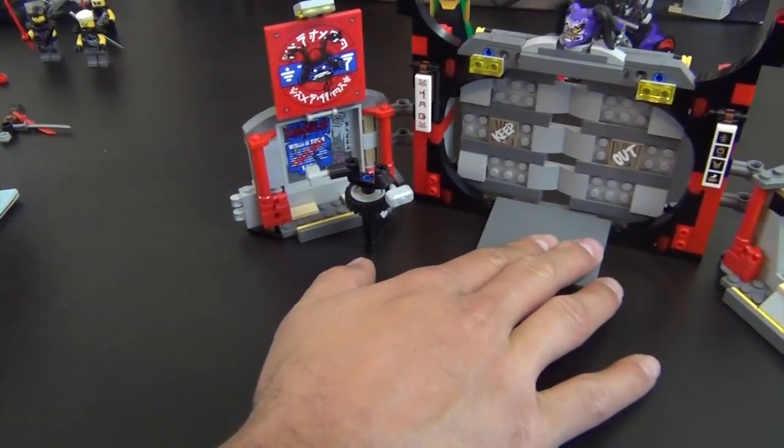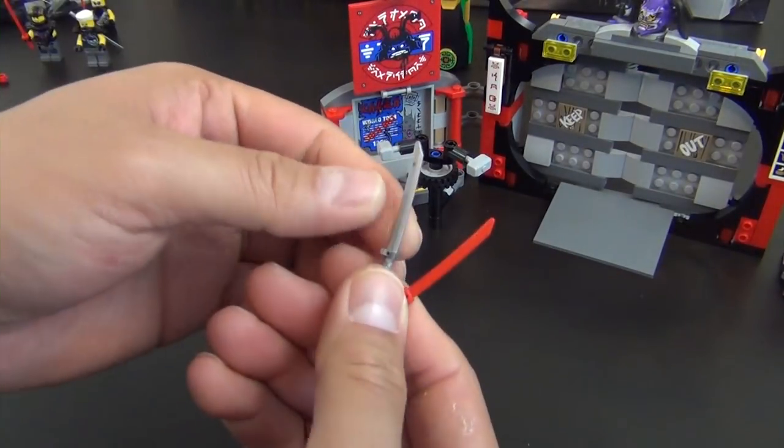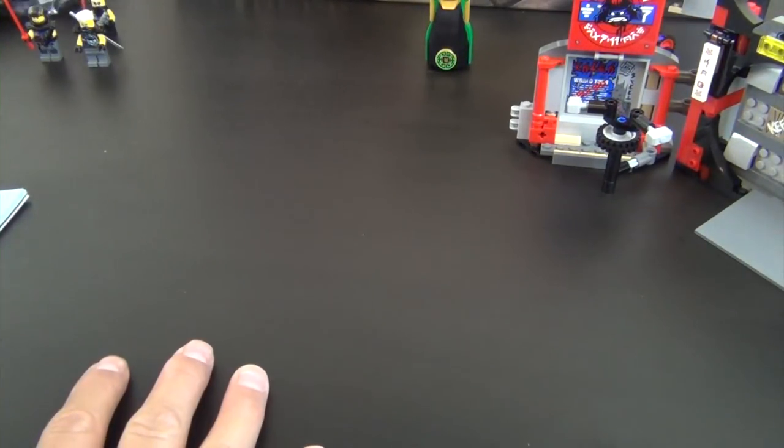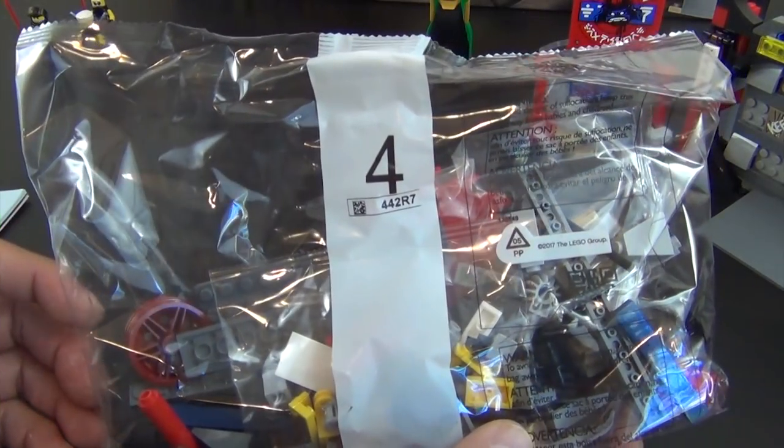Alright, so that completes our third bag of parts. So here's our two extra ninja swords, like I was explaining. We get a bunch of those. So let's move on to our fourth final bag of parts right now.